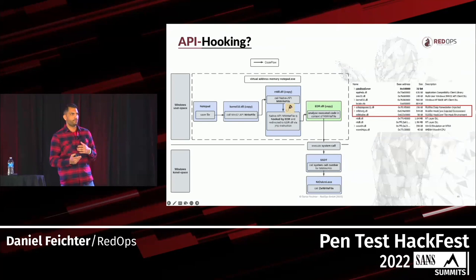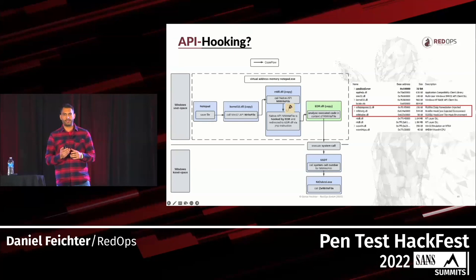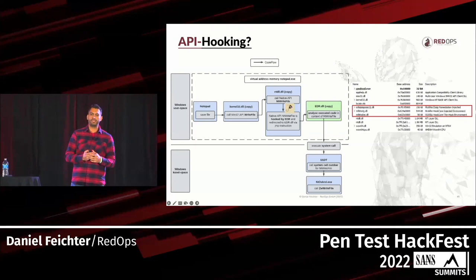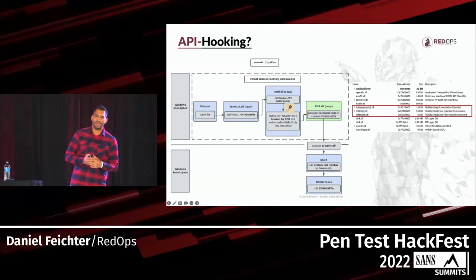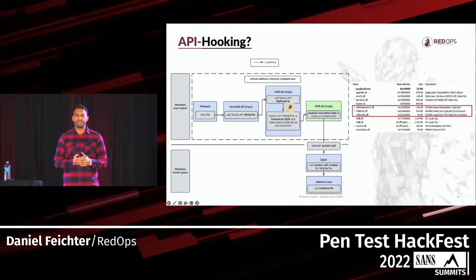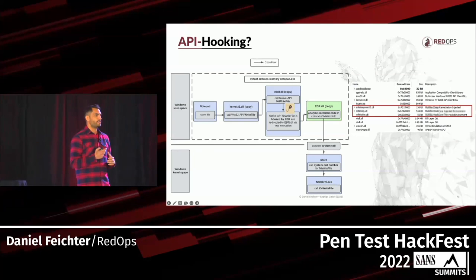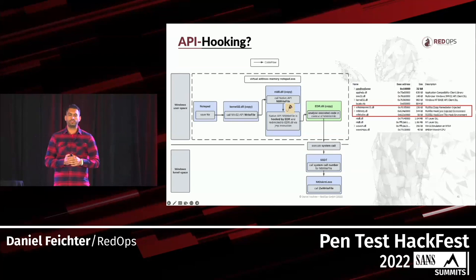What is API hooking, described in a few words? You can imagine it like a proxy on process level, which means the EDR uses its own hooking DLL, injects this DLL into the address space of a process, and sets a hook in the form of a jump instruction on specific APIs — mostly native APIs in ntdll. By this hook, the executed code in context of the hooked API gets redirected to the EDR DLL, which can analyze it in real time and decide whether the executed code is malicious or not.